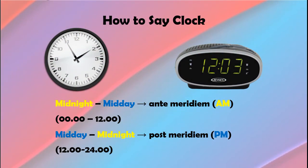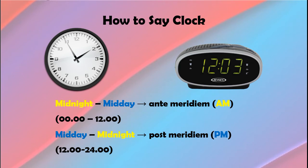How to say clock time. Sebelum kita berlatih cara menyebutkan jam dalam bahasa Inggris, kita kenali dulu 2 periode waktu yang digunakan: AM dan PM. AM adalah singkatan dari Ante Meridiem — periode ini dimulai dari tengah malam sampai tengah siang, atau dari jam 12 malam sampai jam 12 siang. Sedangkan PM adalah singkatan dari Post Meridiem — periode waktu ini dimulai dari tengah siang sampai tengah malam, yaitu dari jam 12 siang sampai jam 12 malam.